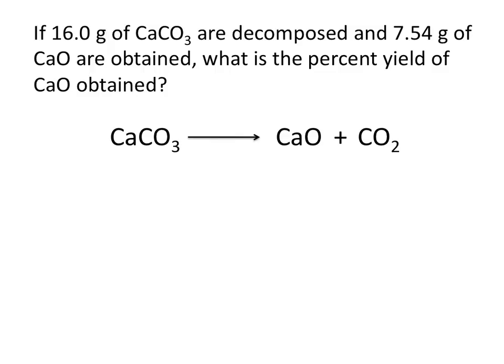Well you'll remember from looking at our last slide that the percent yield is always a ratio of the actual yield over the theoretical yield. So in this problem, 16 grams of CaCO3 is the amount of reactant that we're starting with. And 7.54 grams of CaO is our actual yield.